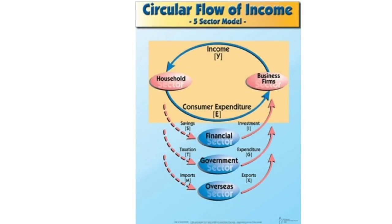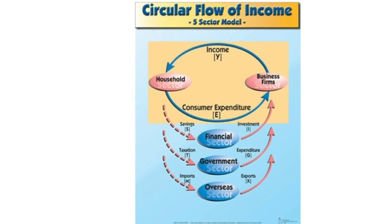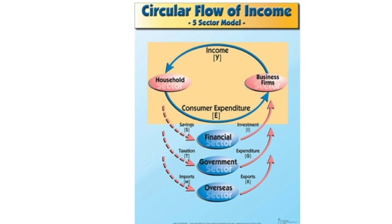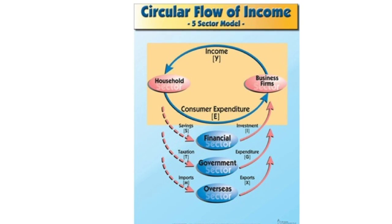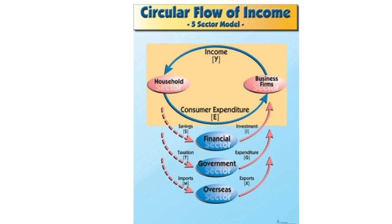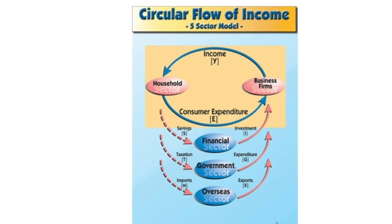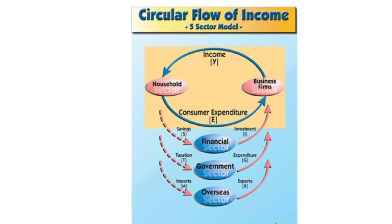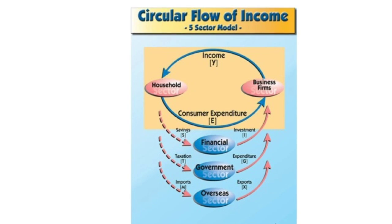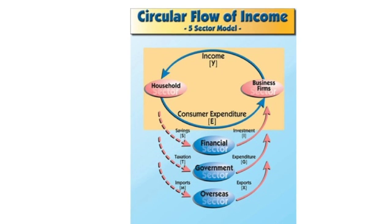This model is quite easy to understand. The 3 red arrows on the left show money leaving the economy, and the arrows on the right pointing upwards towards the business firms show money entering the economy. The 3 main methods of money entering the economy are investment (abbreviated to I).